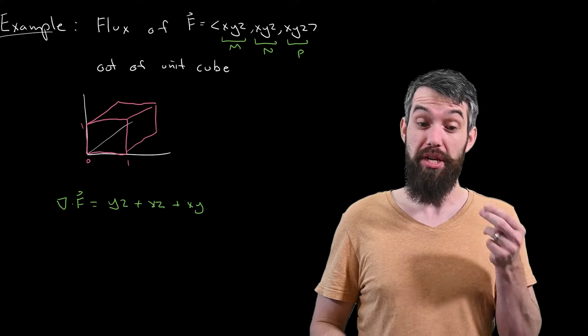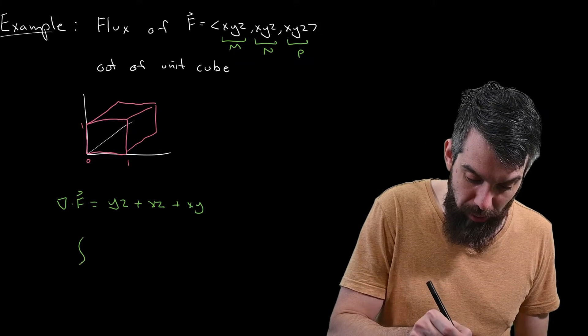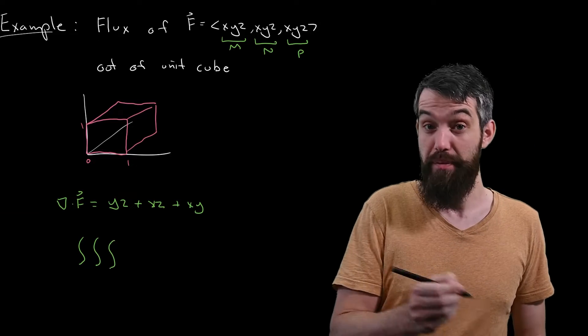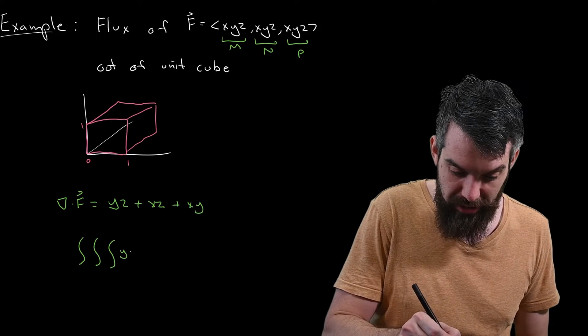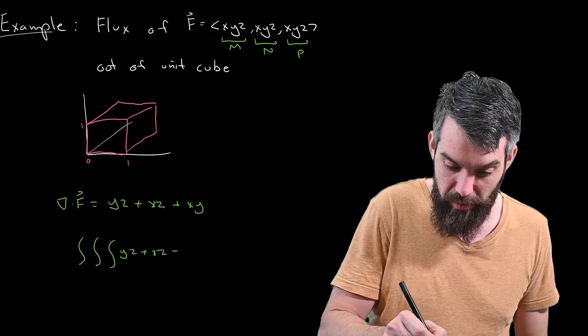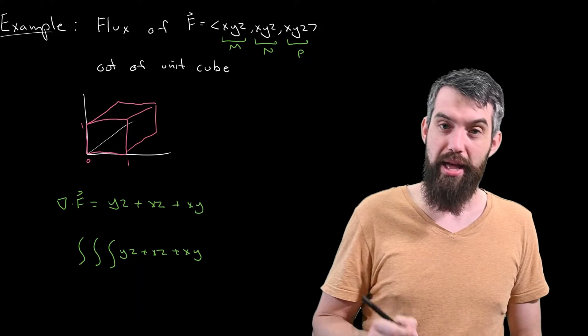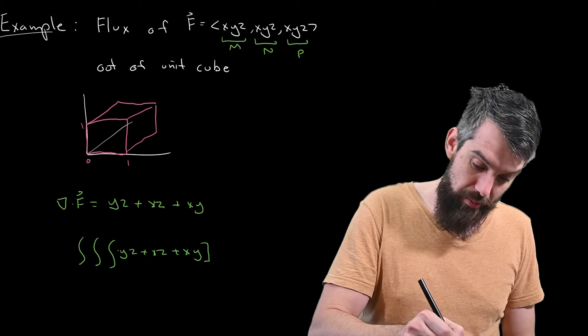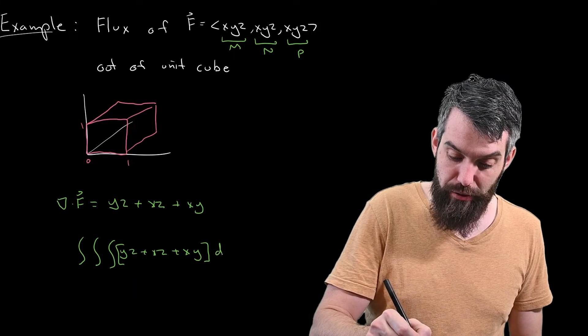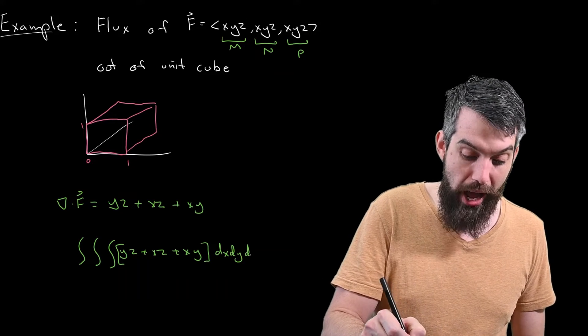And so what I'm interested in computing then is the triple integral of this divergence, so I'll just copy and paste, yz plus xz plus xy. I'll put that in brackets. And then I'm going to do an integral with respect to volume, a little dx, dy, dz.